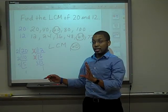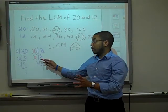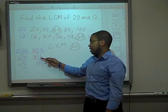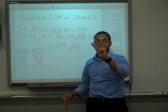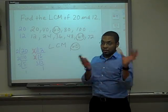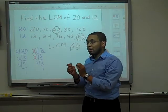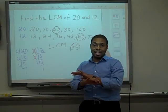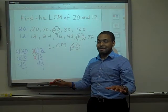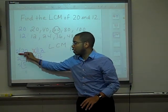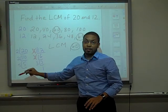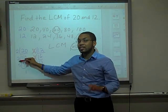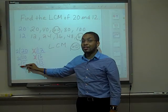So, remember, the greatest common factor was the product of the crossed out factors. And the product of 2 times 2 is 4. So, that's the greatest common factor. But the least common multiple is the product of the uncrossed out factors. 2 is not crossed out. 2 is not crossed out. 5 is not crossed out. So, 2 times 2 is 4. 4 times 5 is 20.